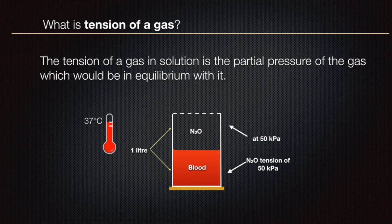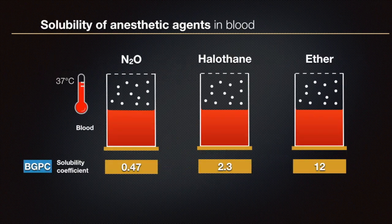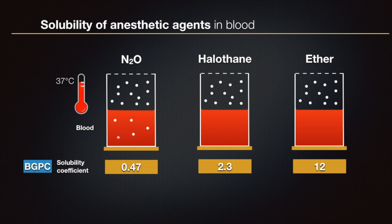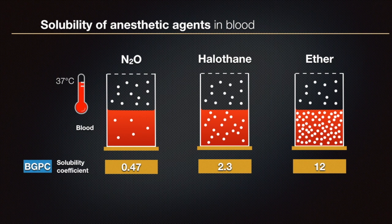Now let's get into the business. There are three measuring cylinders all containing one liter of blood at 37 degrees Celsius, exposed to an atmosphere of nitrous oxide, halothane, and ether respectively. The solubility coefficient of each anesthetic agent is given at the bottom. At equilibrium, you find that there are many more molecules of ether present in the blood because it has the highest solubility coefficient. The higher the solubility coefficient, the greater the number of molecules in dissolved state.